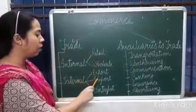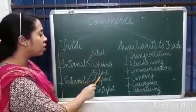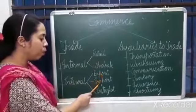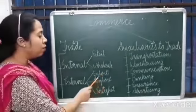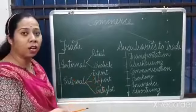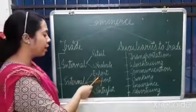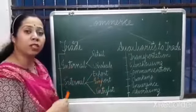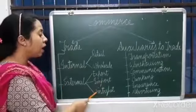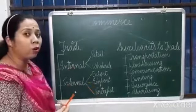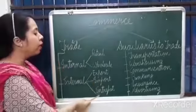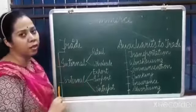External trade is of three kinds: export, import, and entreport. When we are selling goods outside our country, it is known as export. When we are purchasing goods from other countries, it is known as import. And when we are importing goods with the purpose of re-exporting them, it is known as entreport.